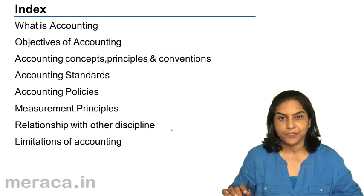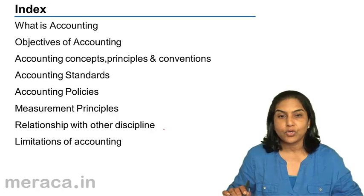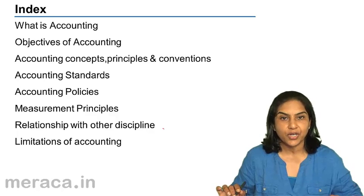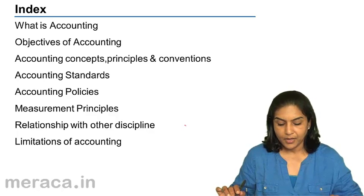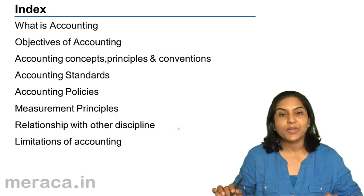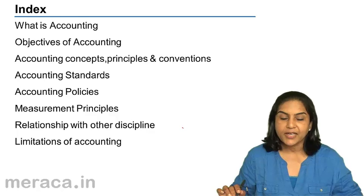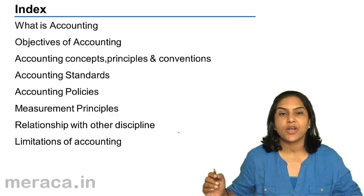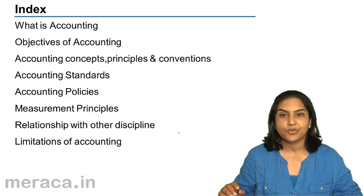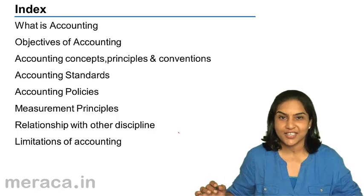We will also discuss accounting policies — why sometimes we have different accounting policies, whether with reference to depreciation or valuation of inventories. We will touch upon the measurement principles, noting that everything in accounting is usually recorded at historical cost. We shall then discuss the relationship of accounting with other disciplines like mathematics, economics, statistics, and management, and conclude with the limitations of accounting. We will also have short quizzes in between to test our understanding at each step.